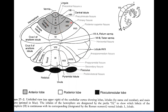The anterior lobe extends up to the primary fissure, which forms the boundary between the anterior and posterior lobes. The anterior lobe is divided into five lobuli, while the posterior lobe consists of lobuli six, seven, eight, and nine. The flocculonodular lobe is indicated by number ten.